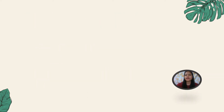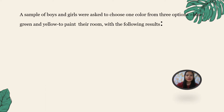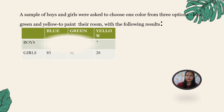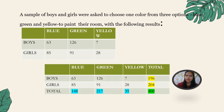The very first step to calculate phi and Cramér's V is to know how to calculate the chi-square. Here is a sample where boys and girls were asked to choose one color from three options — blue, green, and yellow — to paint a room, with the following results. The first step is to calculate the row and column totals of the table.